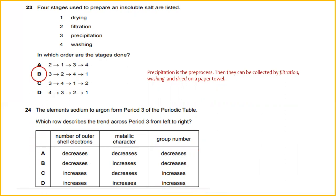The elements sodium to argon form period 3 of the periodic table. Which row describes the trend across period 3 from left to right? You have to refer to the periodic table and be alert to the properties of the elements. When the number of outer shell electrons increases, the metallic character decreases and the group number also increases.